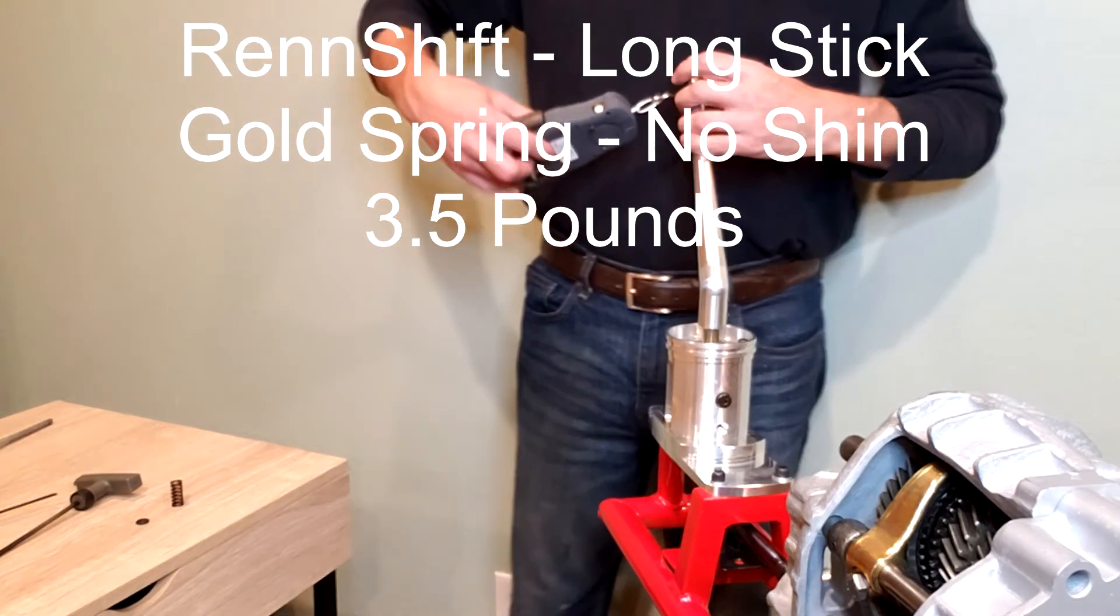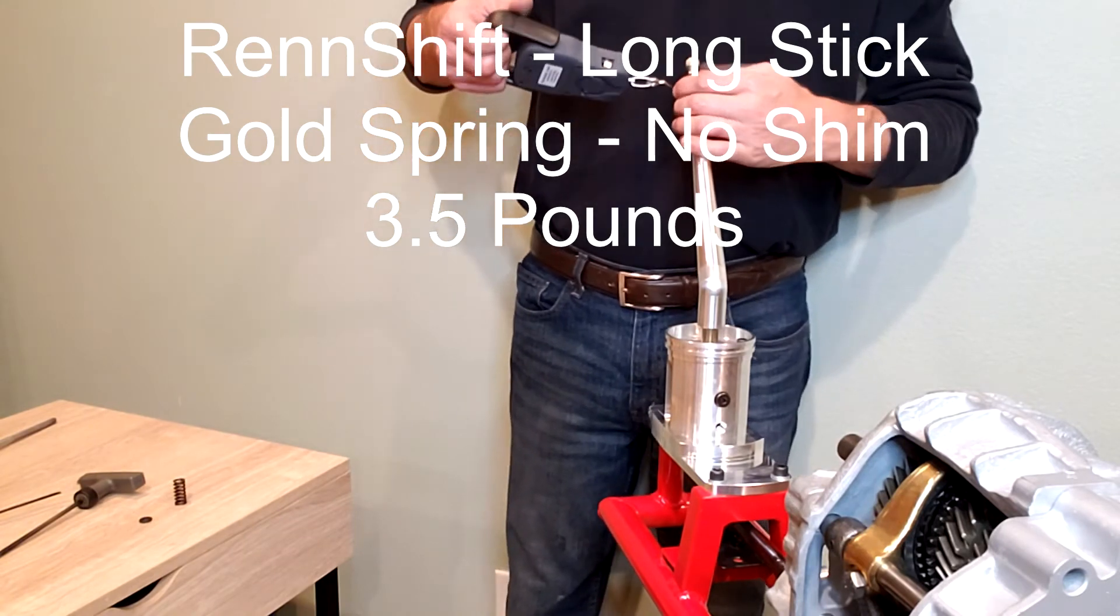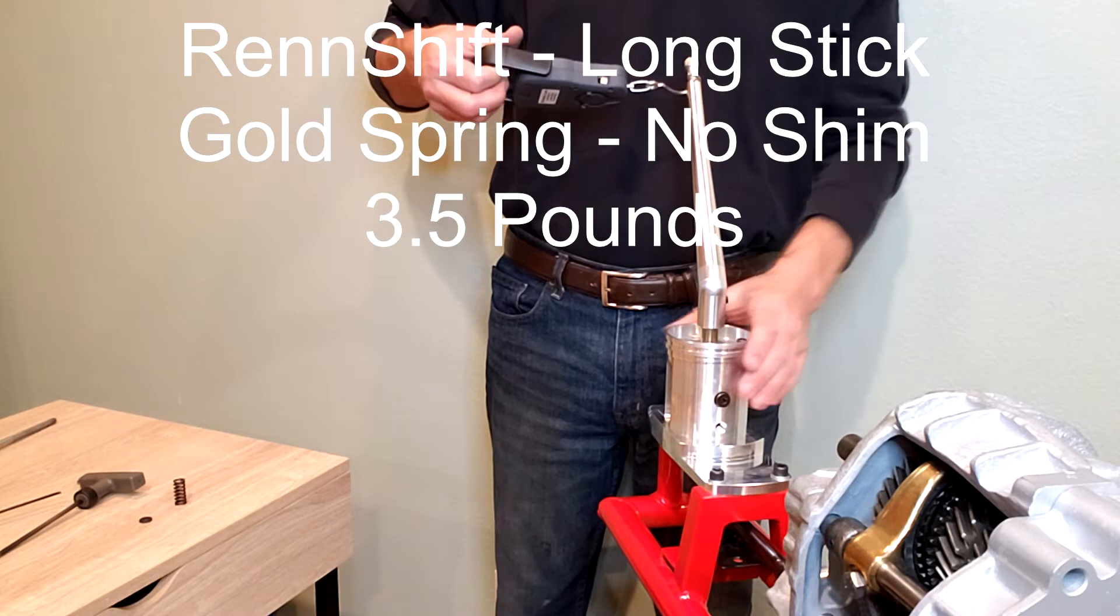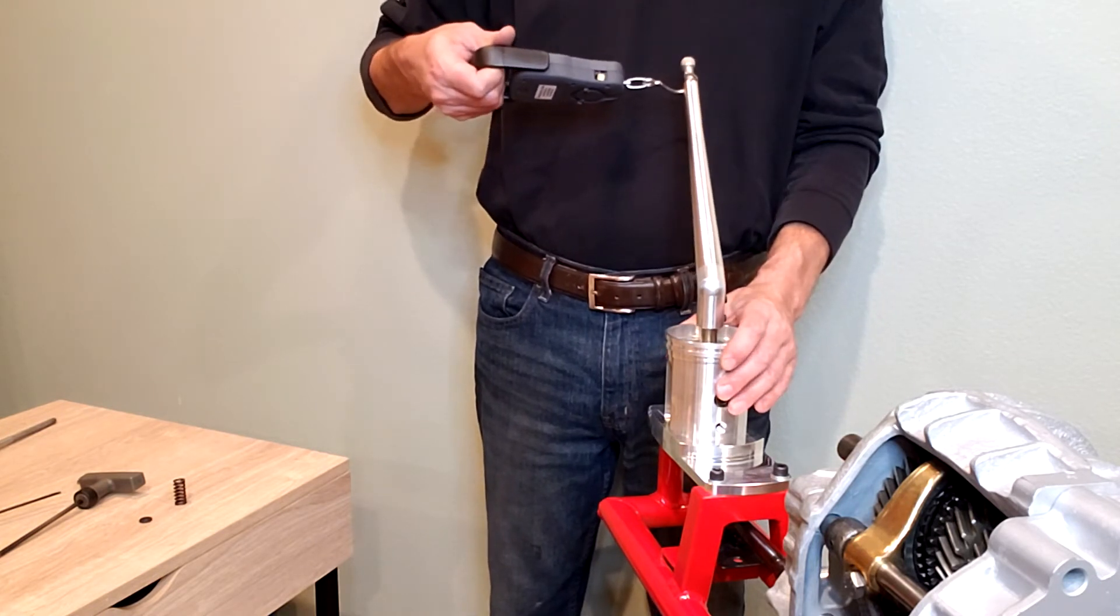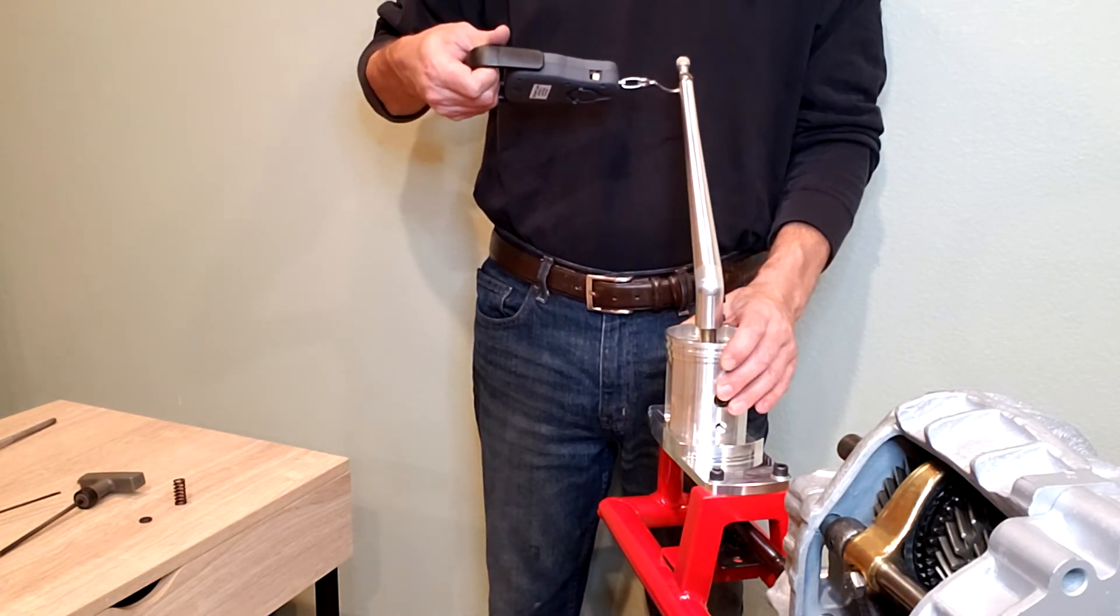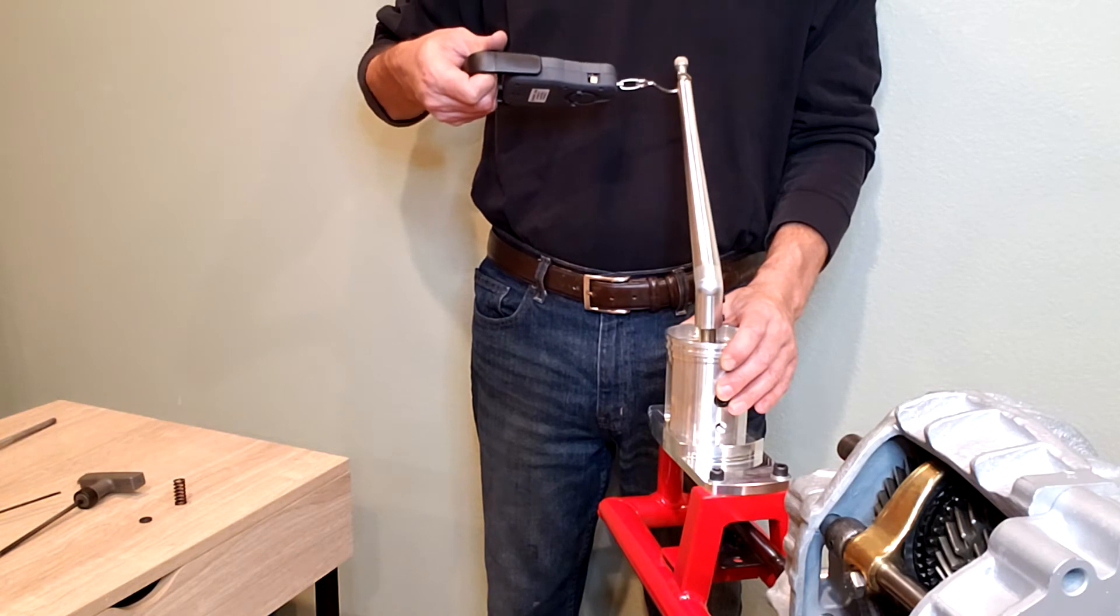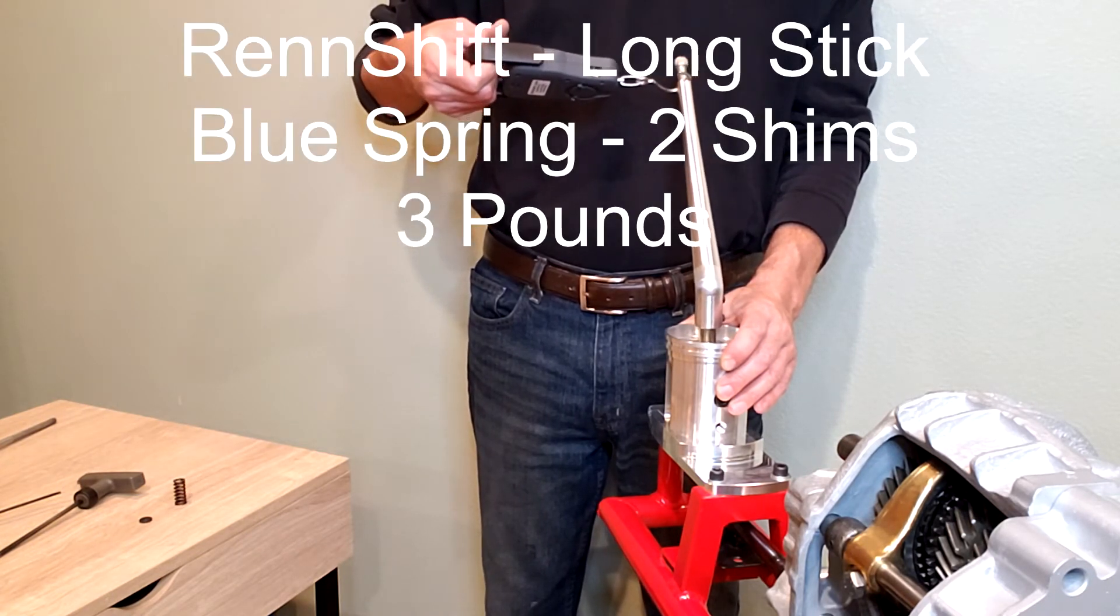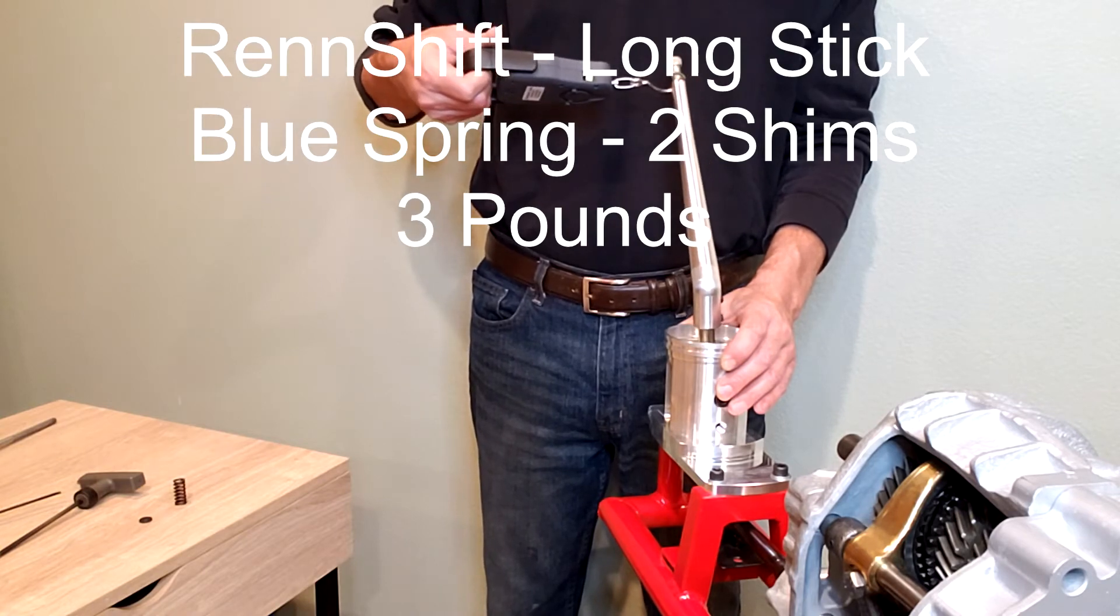Swing around here to the other side. Blue spring with two shim washers in place. And that gives us approximately three pounds as we go through some motion there.